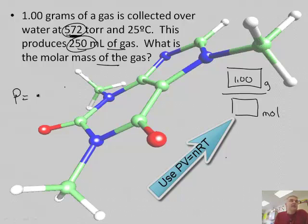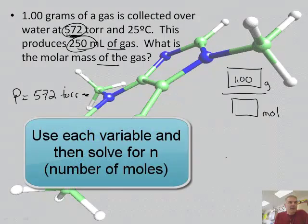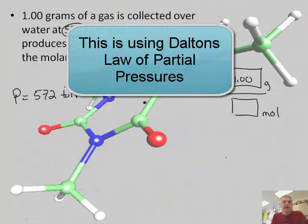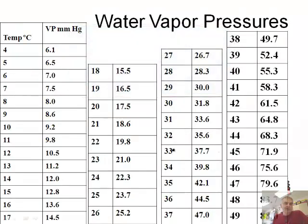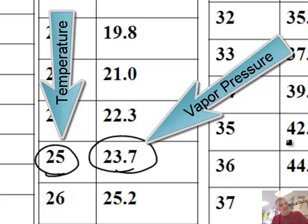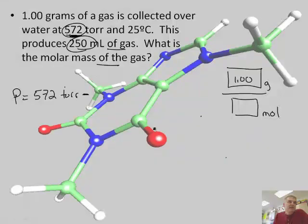So what's our pressure? Our pressure is 572 torr. Now, I have to subtract the water vapor pressure. So we have to go to the water vapor pressure table. So I'm going to pause and go find that. So here's the water vapor pressure table. So at 25 degrees Celsius, the water vapor pressure is 23.7. So we're going to subtract this from the answer, 23.7.